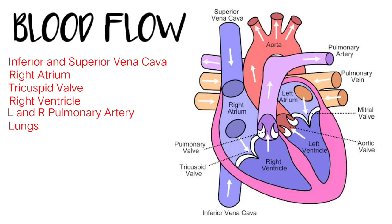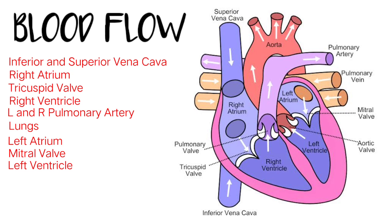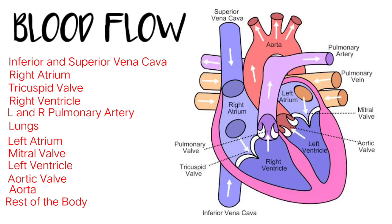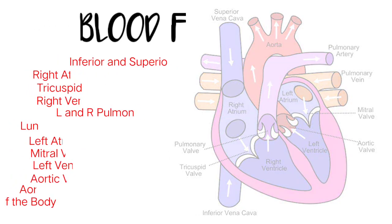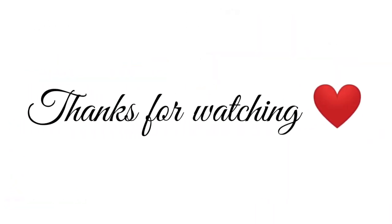Continuing the summary: from the right ventricle, blood flows into the left and right pulmonary artery, into the lungs, then to the left atrium, mitral valve, left ventricle, aortic valve, aorta, and finally to the rest of our body.